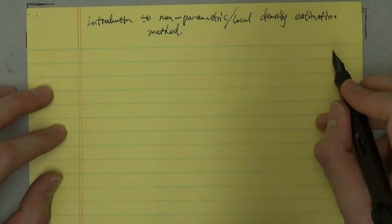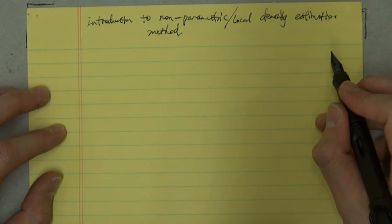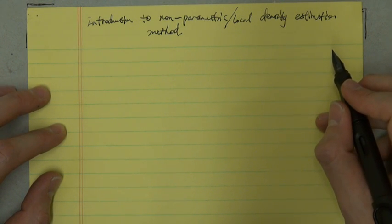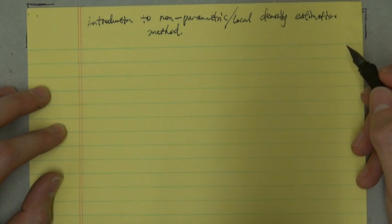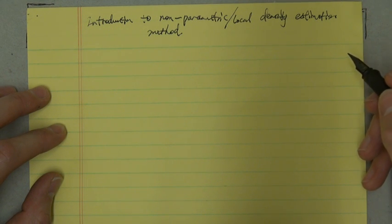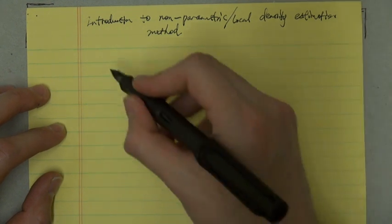So in our previous lecture, two kinds of global parametric density estimation approaches, the maximum likelihood estimation and Bayesian parameter estimation, have been discussed. And the general process we can draw like this.